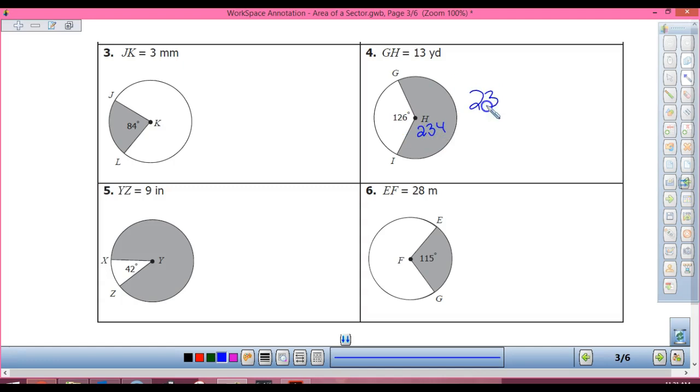So now I've got 234 divided by 360 times, what is 13 squared? 169 pi. 234 divided by 360 times 169, 109.85 yards squared.